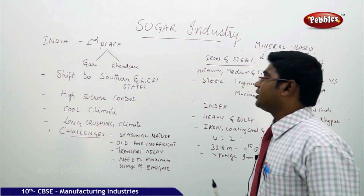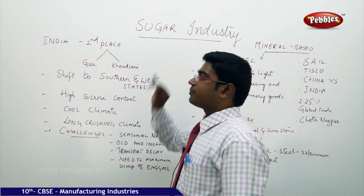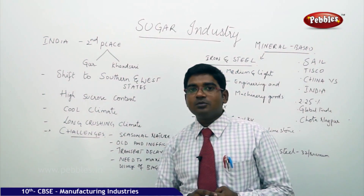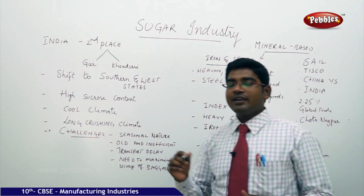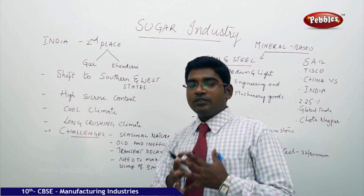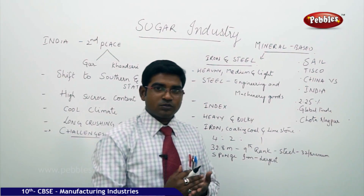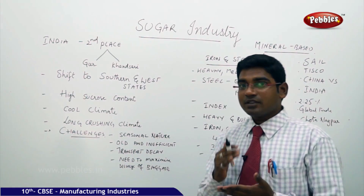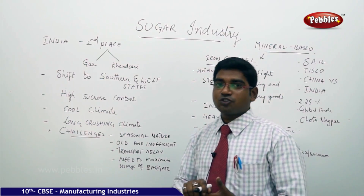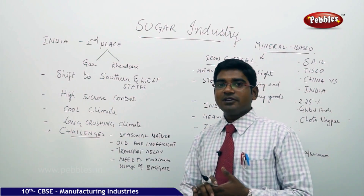Now we shall discuss about the agro-based industries — in that we have the sugar industry. India has a significant place when it comes to the production of sugar. India is standing at second place in the production of sugar. This we need to remember very carefully. India is second, and the first country which stands at the top level in production of sugar is Cuba.